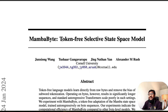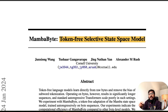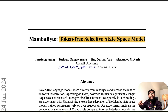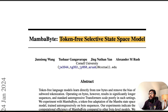MambaByte is a token-free selective state space model. That's a lot to unpack. Most current large language models are transformer-based models, and these transformer-based models are ultimately trying to predict the next token — it's a next token prediction engine. What this paper is trying to say is: can we have a model that is completely token-free?